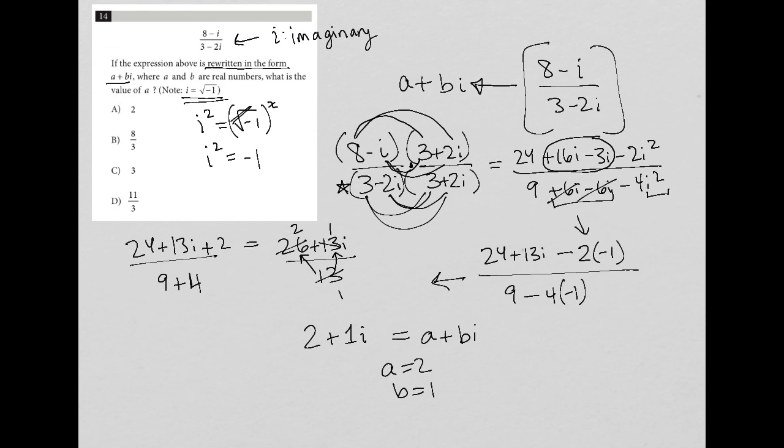The question here is asking me, what is the value of a? So we have a value, a's value is 2. So therefore, the correct answer is choice a.